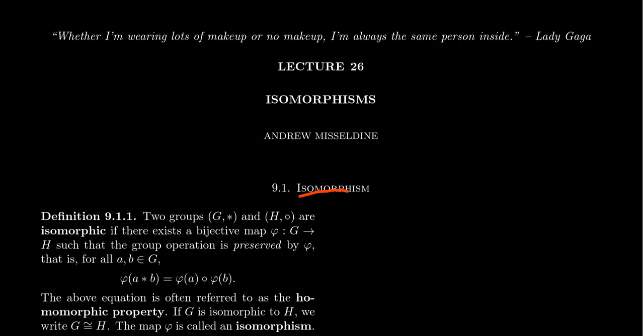Isomorphism is a pretty big deal. When you look at the word in Greek, 'iso' means same, 'morph' means shape. An isomorphism is a way of saying when two groups have the same shape. There are analogs to the notion of isomorphism for other algebraic structures like rings, fields, modules, vector spaces, etc.